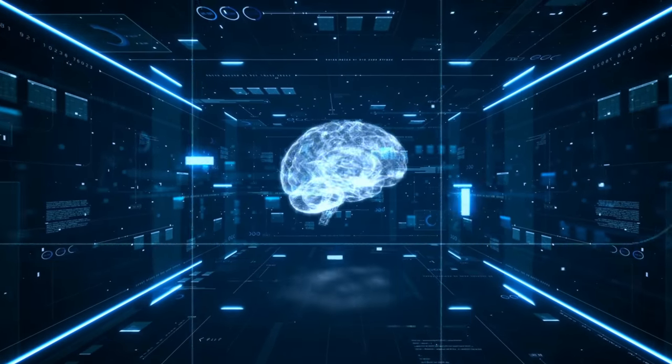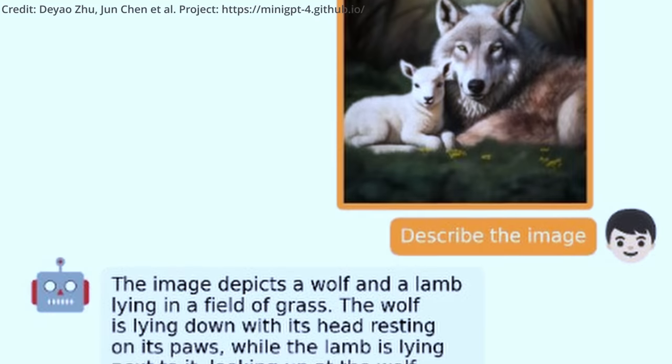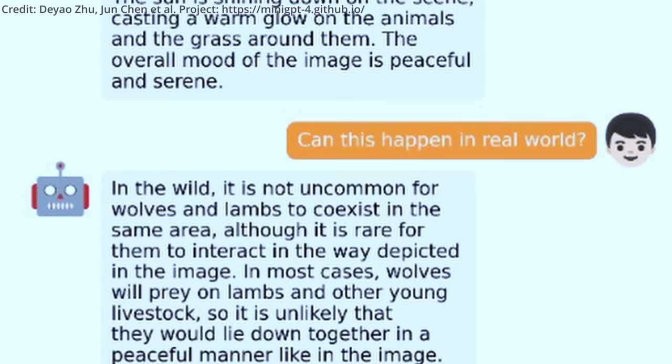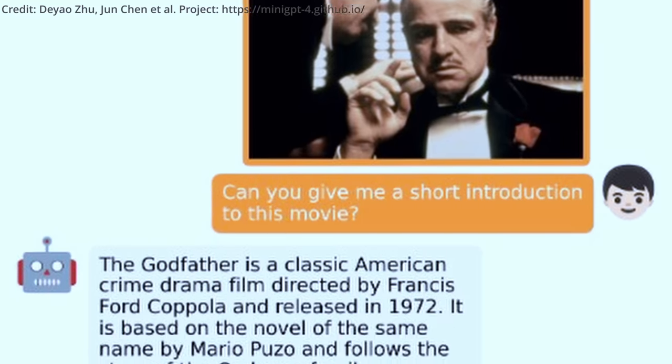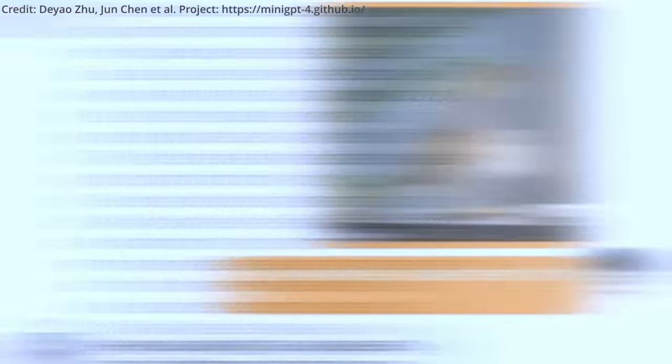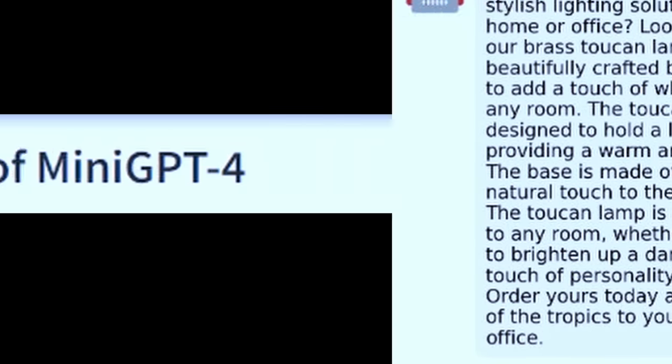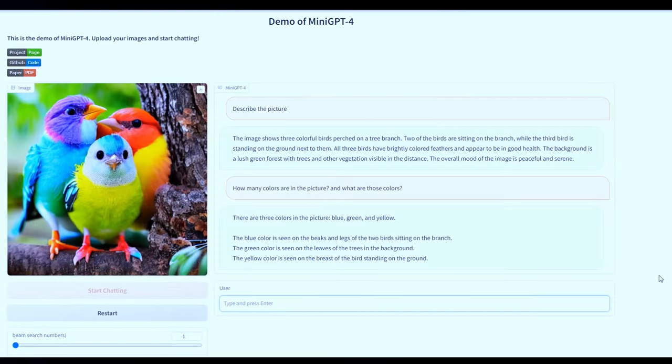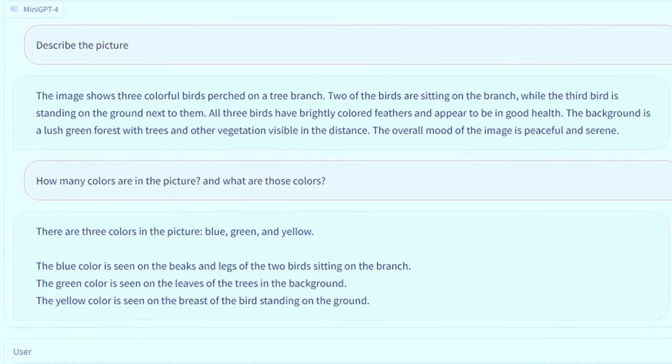Furthermore, this new model has showcased its remarkable capabilities through various demonstrations, such as generating detailed image descriptions, identifying amusing aspects within images, uncovering unusual content from images, retrieving facts about people, movies, or art from an image, and even writing raps or creating advertisements for products seen in an image. All of these examples help to illustrate the powerful potential of Mini-GPT4.